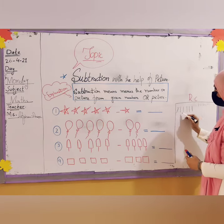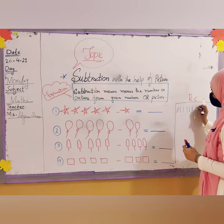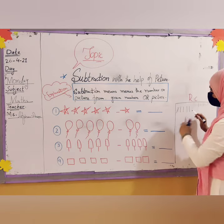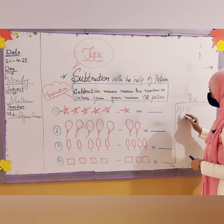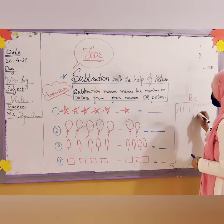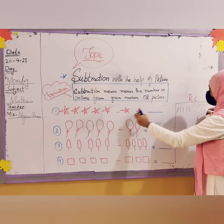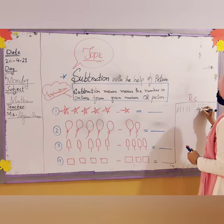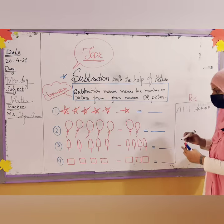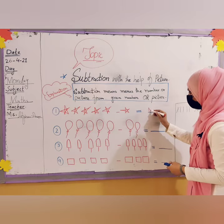Now we minus one star from the five — cross it out — and count how many remain: one, two, three, four. If we minus one star, four stars remain.